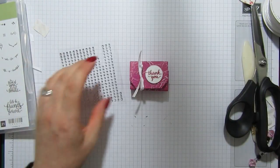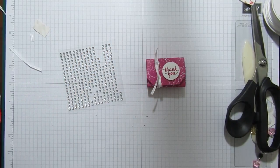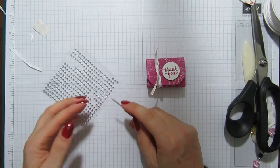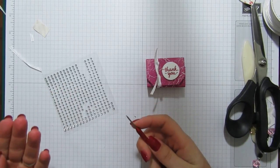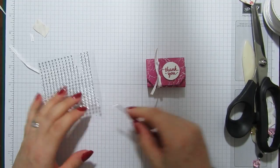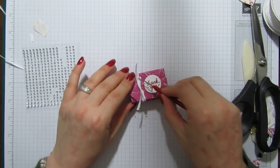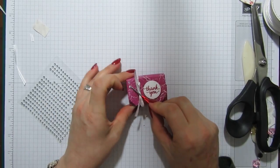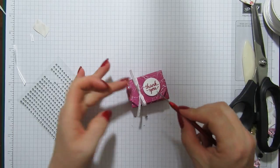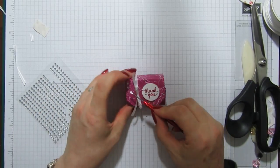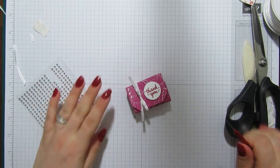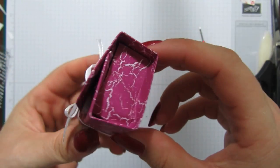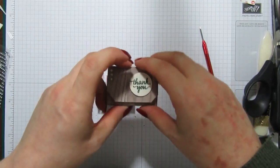And then I've got a few little rhinestones here and I'm just going to pop a few on the box. Where did that go? I have no idea. So I'm just going to pop three in the left hand corner.